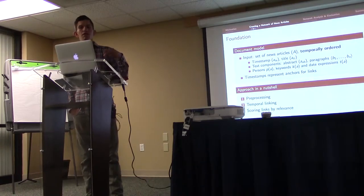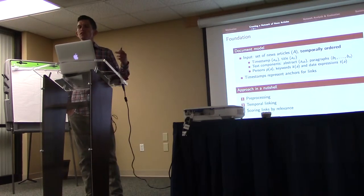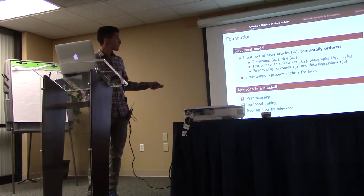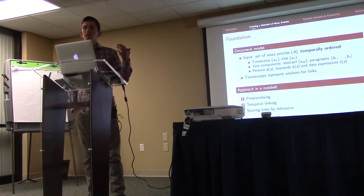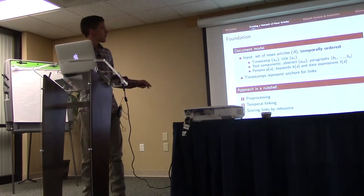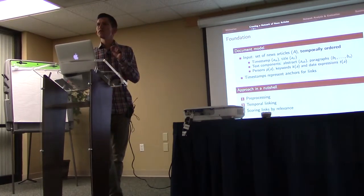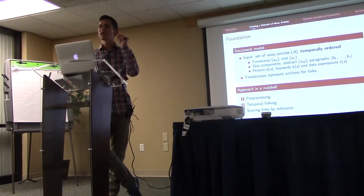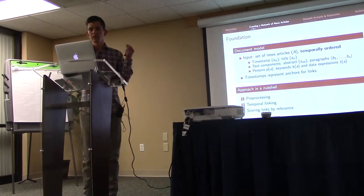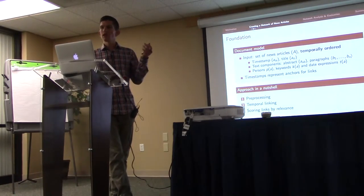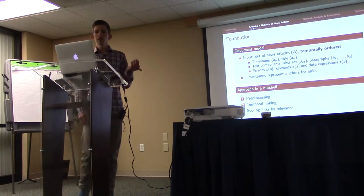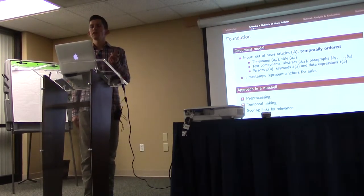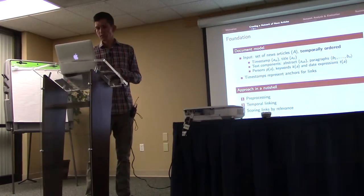We define three functions that extract additional information from these text components: one for persons, one for date expressions, and one for keywords — important words that characterize the event in one paragraph. The timestamps are very important because they anchor the articles on a time scale and serve as anchors for links created later. Our approach works like this: we first perform preprocessing on all the articles, then link the articles using our temporal linking approach, and finally score the links by relevance scores.